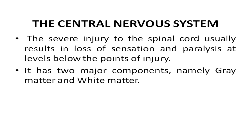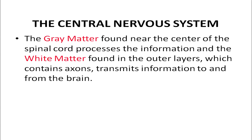The spinal cord has two major components: the gray matter and the white matter. The gray matter, found near the center of the spinal cord, processes information — determining what needs to be done with incoming information. The white matter, found in the outer layers of the spinal cord, contains axons that transmit information to and from the brain for the muscles to act.